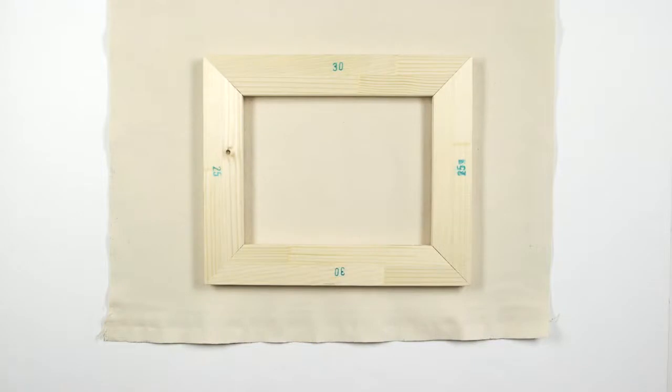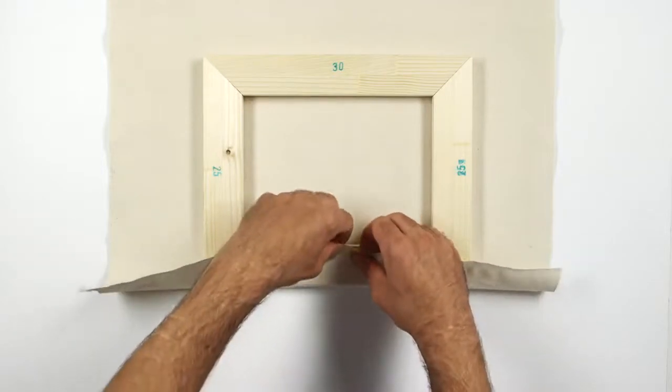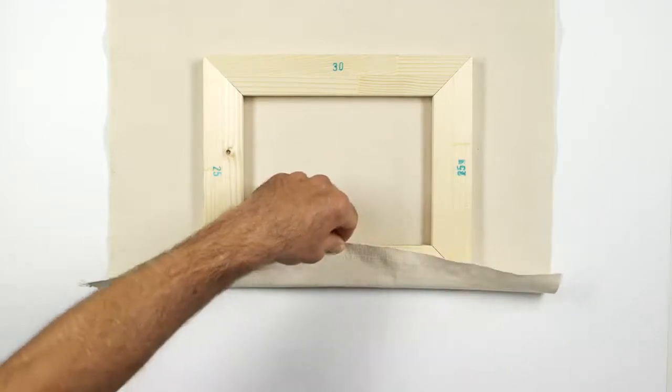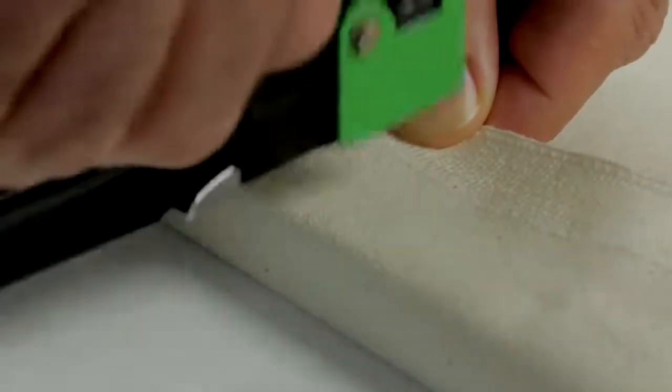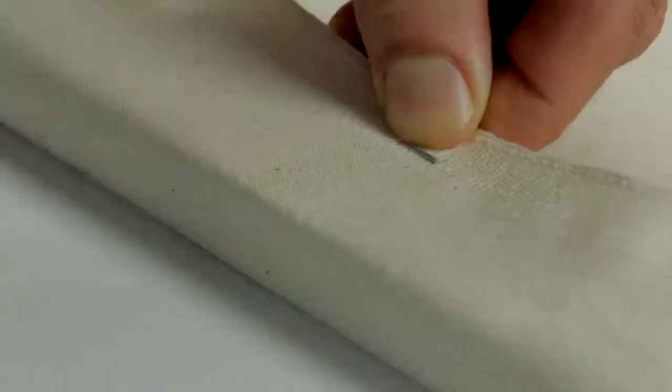On one of your longer edges, line up the canvas with the back edge of the stretcher and staple at the middle of the stretcher. Now staple outwards from the center to the edges, giving about two fingers distance between each staple.